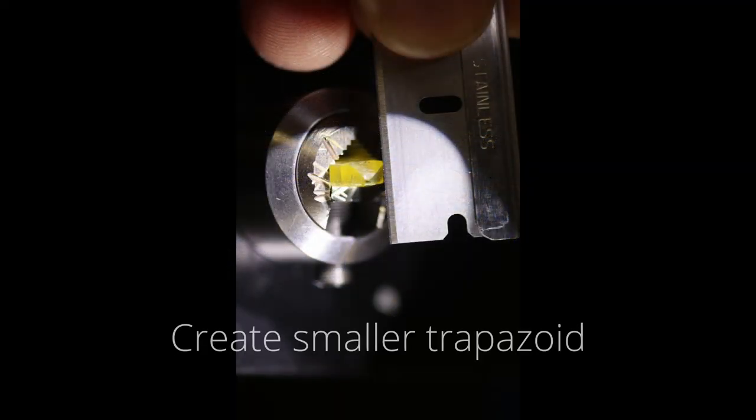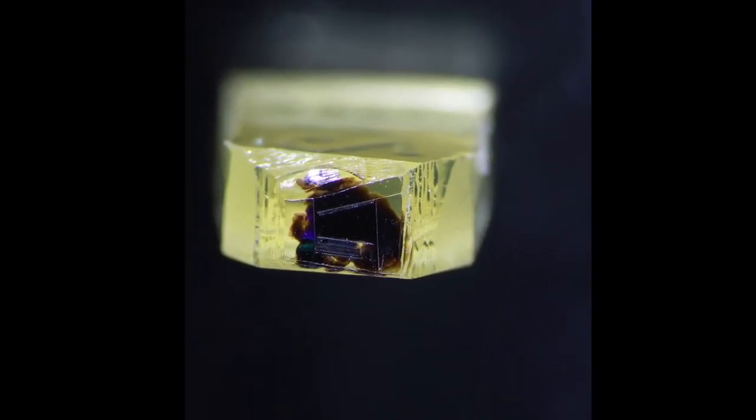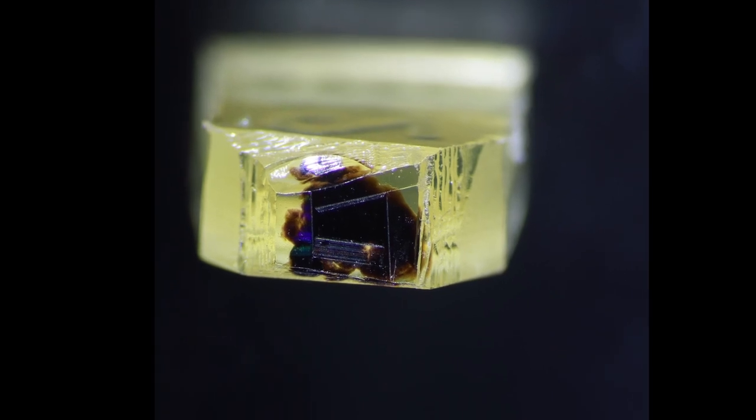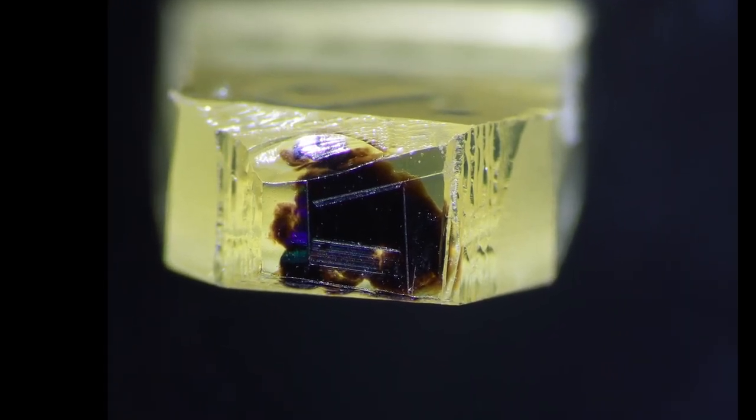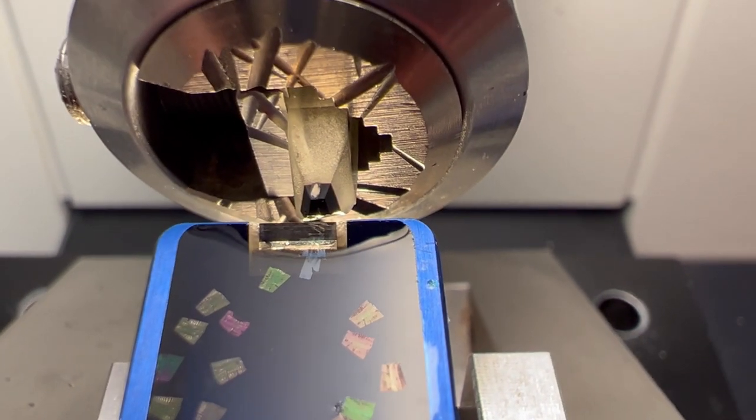Then I take that epoxy specimen. I create a smaller trapezoid on top of the larger trapezoid for our 70 nanometer sections. You can't section at 70 nanometers with larger trapezoids.